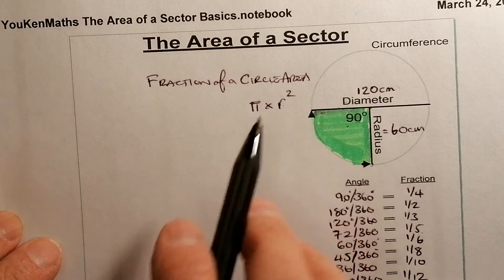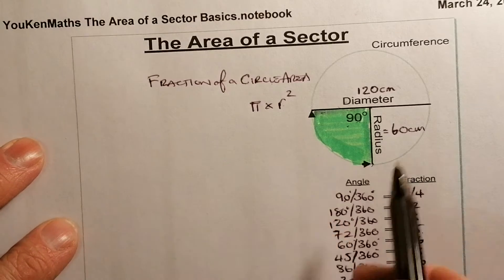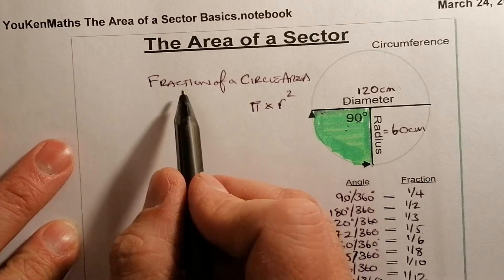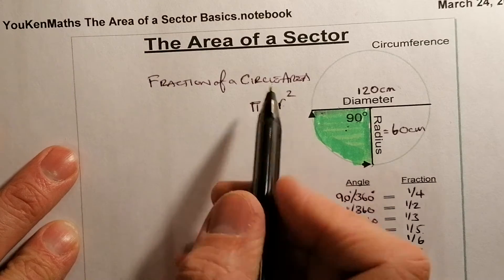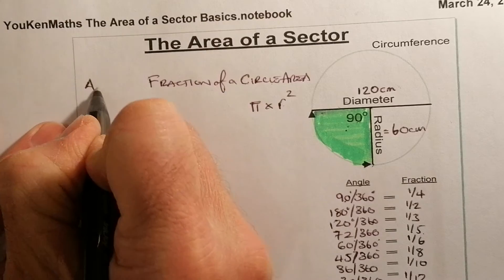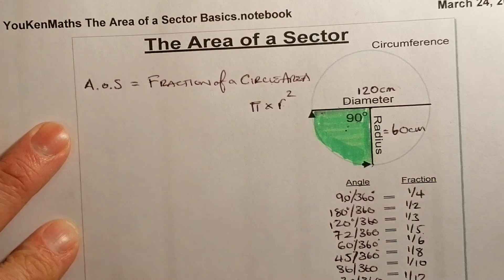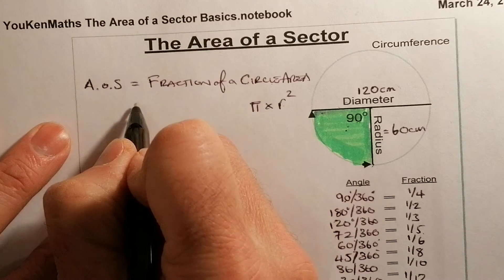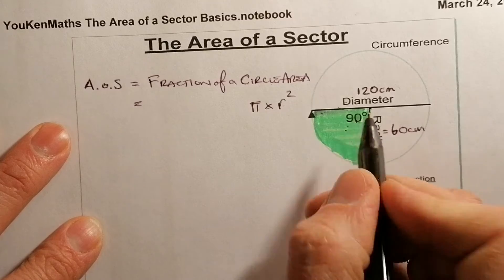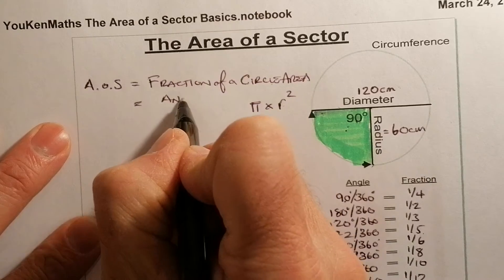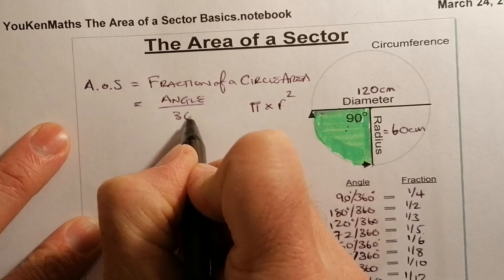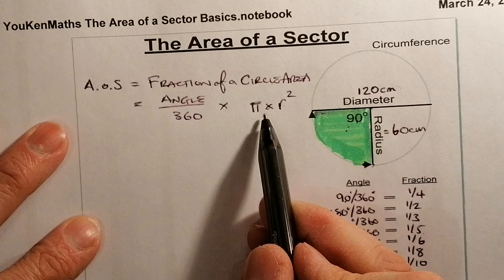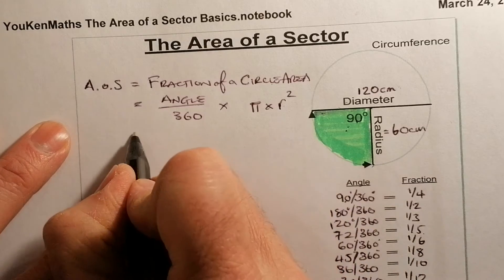We're working with a calculator today. To work out the area of this sector, we take a fraction of the area of a circle. The area of the sector — AOS — equals the angle divided by 360, multiplied by the area of the circle, which is pi r squared. Let's put our values in and get this calculated.